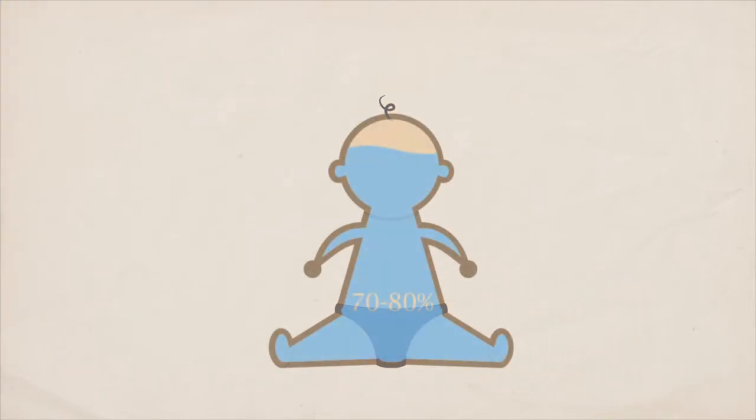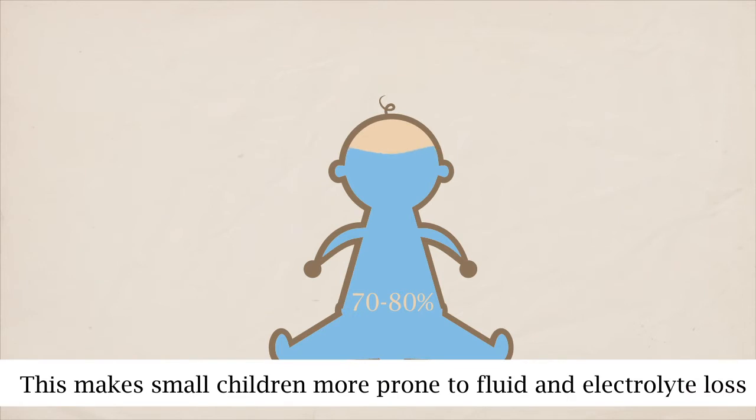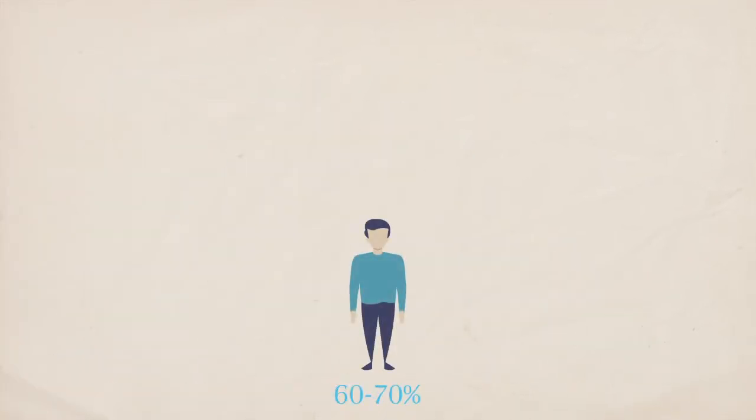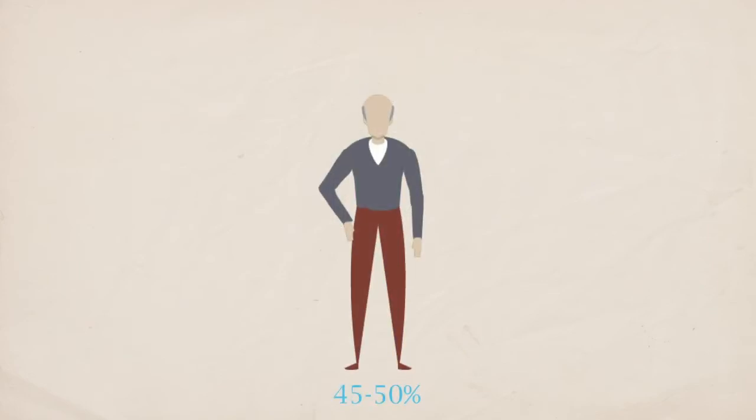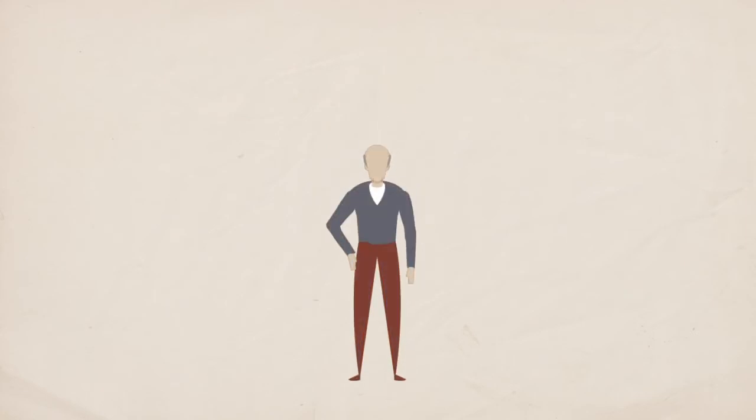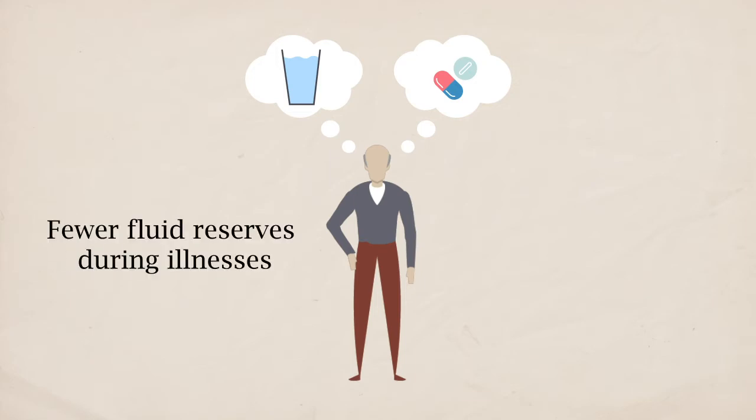A newborn infant's body weight is between 70 and 80% water, which makes small children more prone to fluid and electrolyte loss. As we age, our fluid level drops. 45-50% of an older adult's body weight is water. Older adults may lose their sense of thirst or take medications that remove excess water from the body. This means they have fewer fluid reserves during illnesses and are at greater risk of dehydration, which is one of the leading causes of hospitalization in older adults.